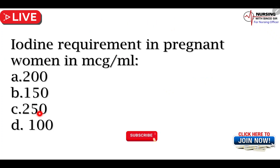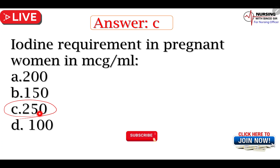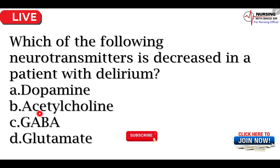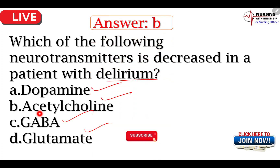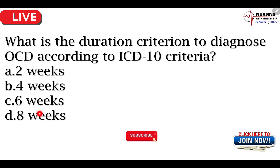Iodine requirement in pregnant women — 250 microgram per ml। Next question — which neurotransmitter is decreased in patient with delirium? Options: dopamine, acetylcholine, GABA, glutamate। तो यहाँ पर सही answer — B option — acetylcholine। Acetylcholine अगर decrease करता है तो delirium होगा। इसको जरूर याद रखना है।